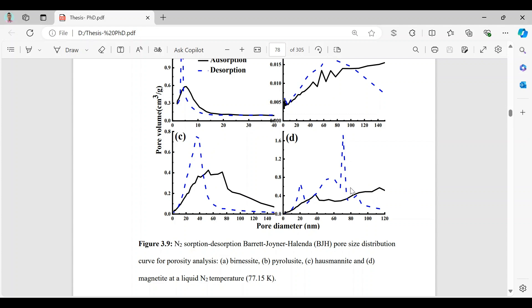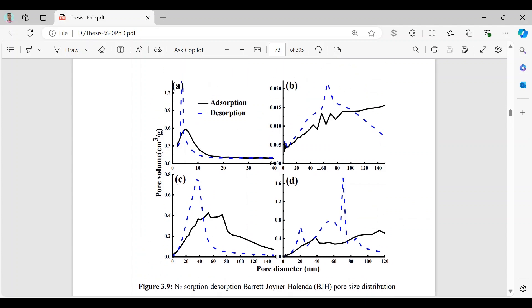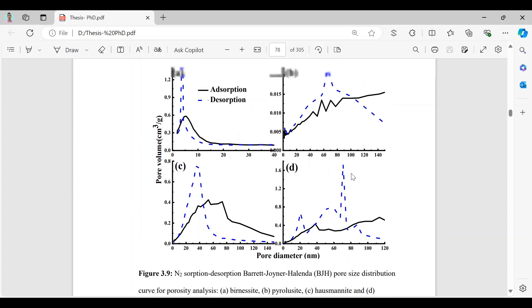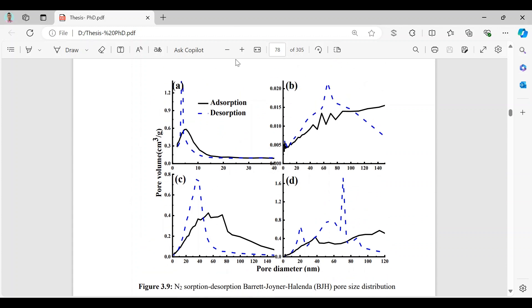So from BJH's pore size distribution curve we can easily predict whether a material is only mesoporous or both mesoporous and microporous in nature.